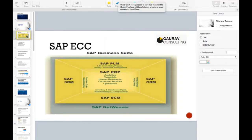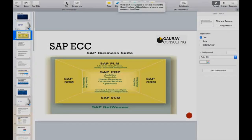Now let's go to the SAP ECC picture. In the center you can see SAP ERP — that is the central component. On top of SAP ERP, some customers are using SAP CRM, SAP SRM, SAP PLM, SAP SCM. These are just examples; there can be more components outside the SAP ERP box.